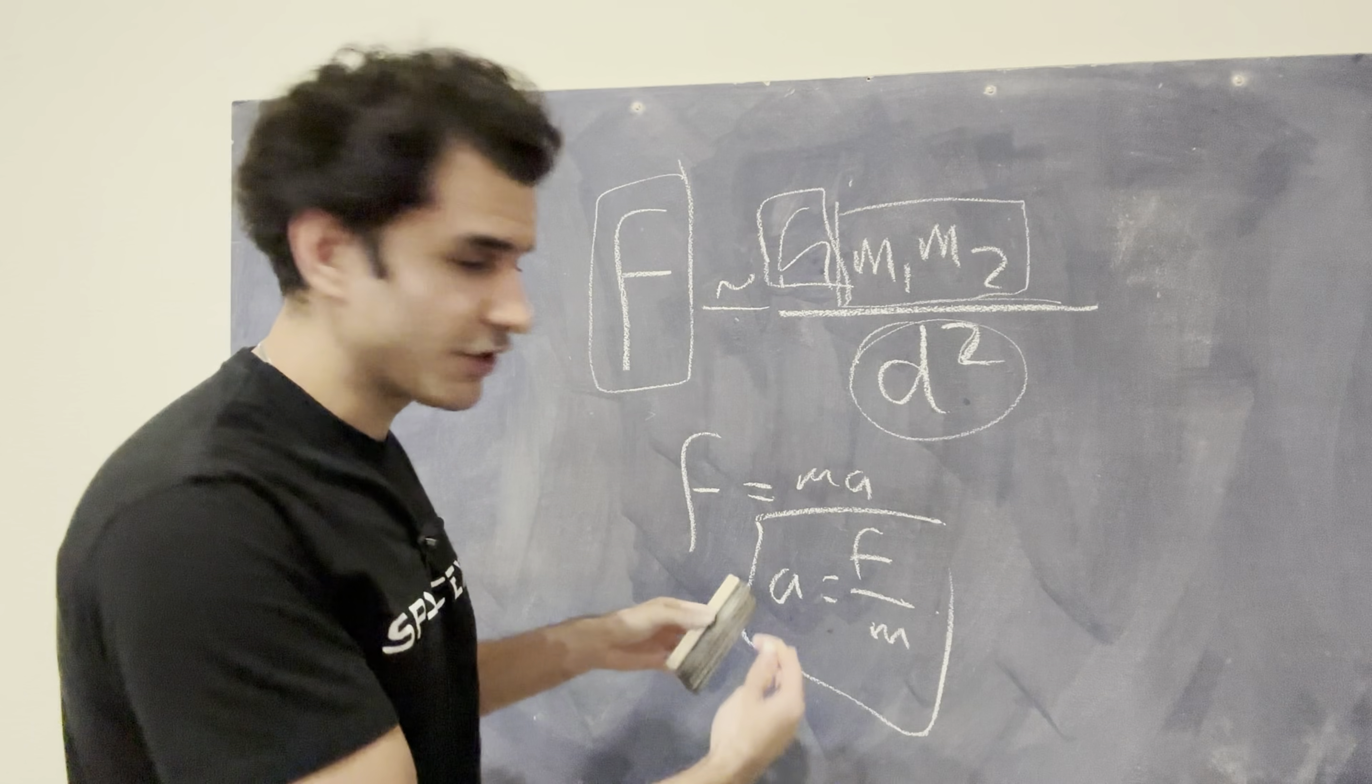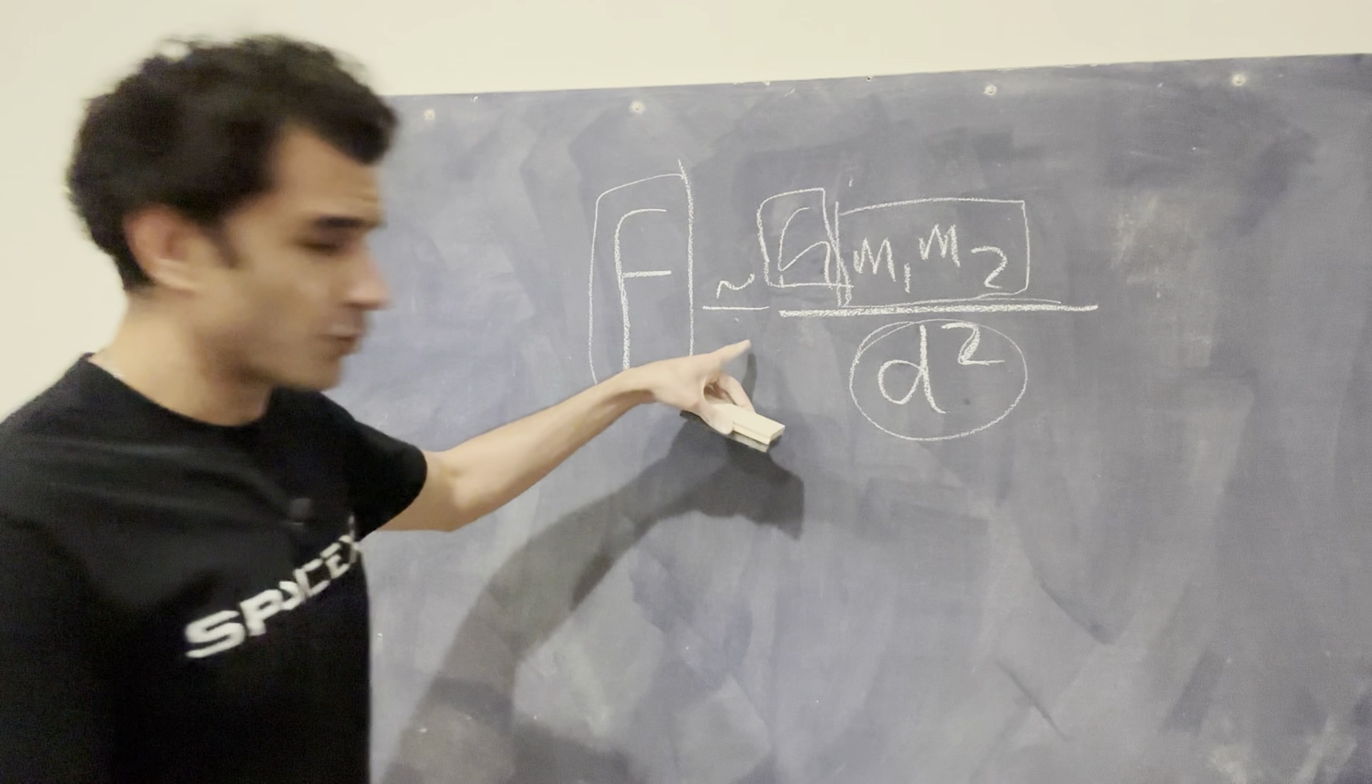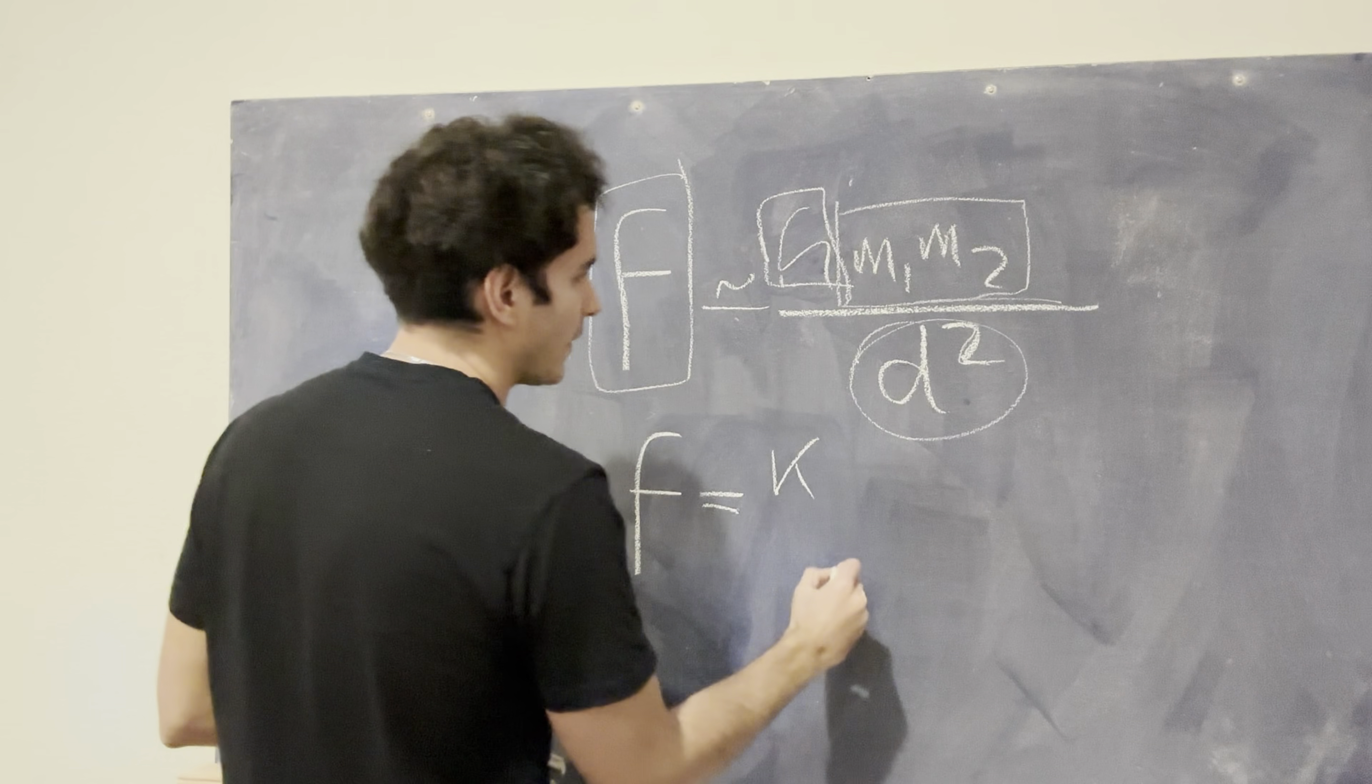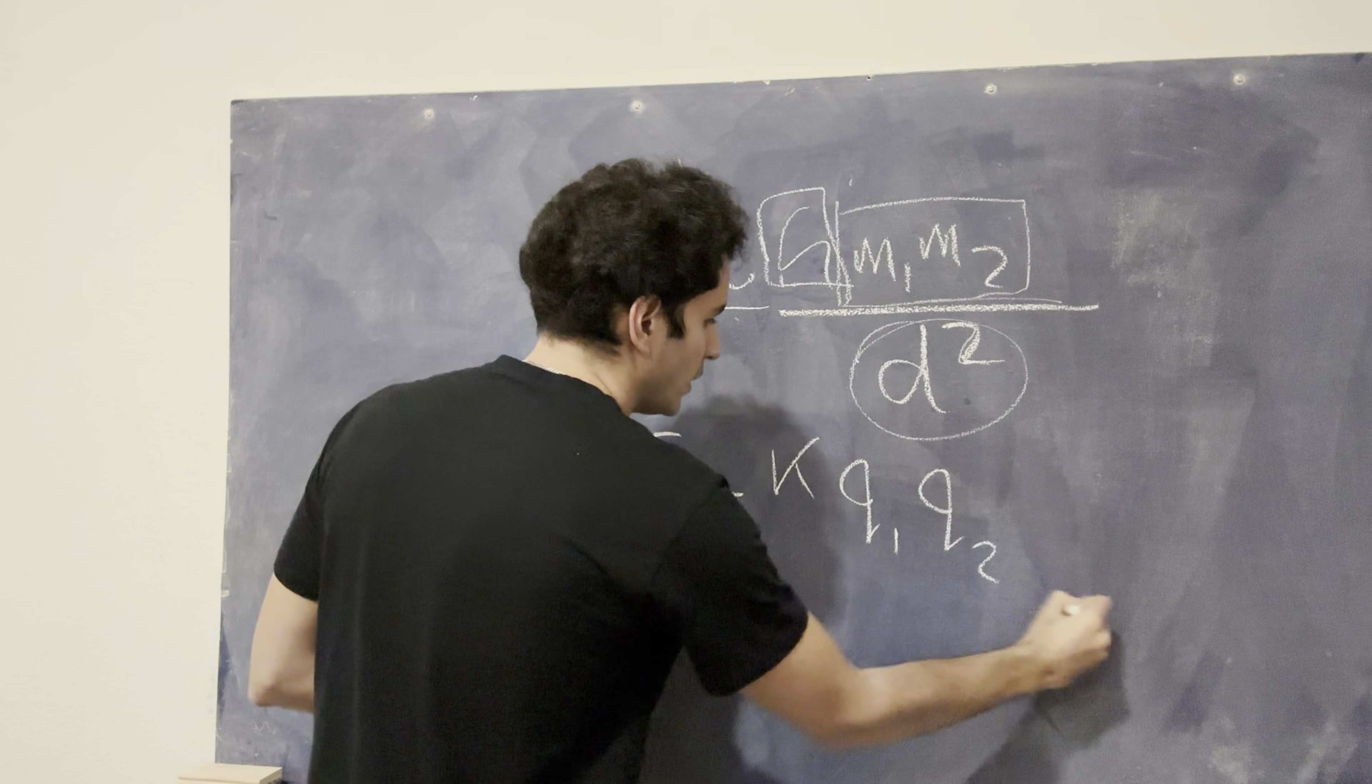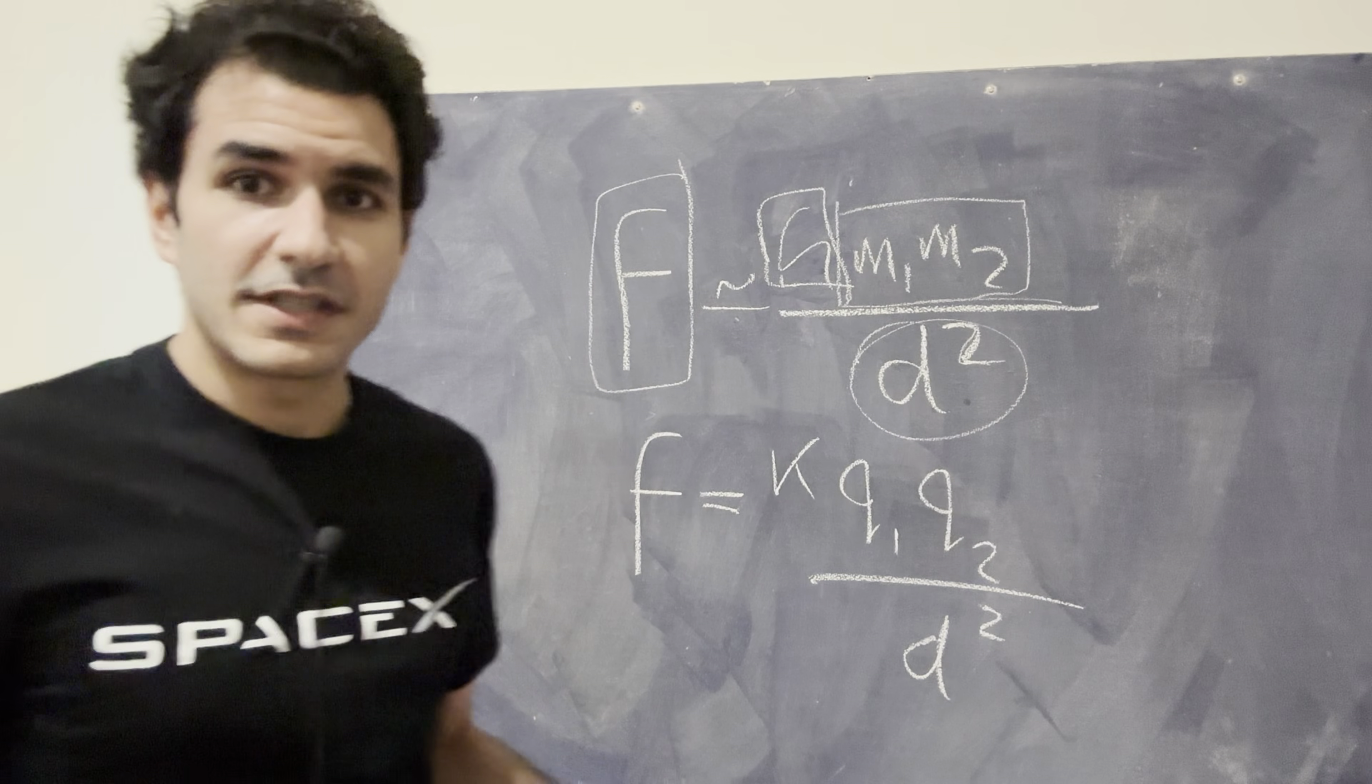Something very interesting that happens when we transition to equation number three, is we see an equation that looks very similar to this one, which is F=kq1q2/d^2. And this is actually describing the exact same thing. Instead, where this is describing gravitational force, or gravitational field, this is describing an electrical force.